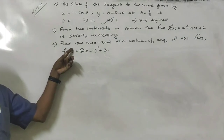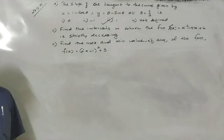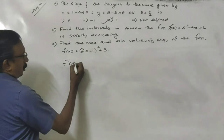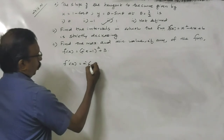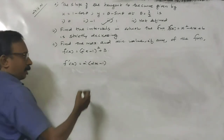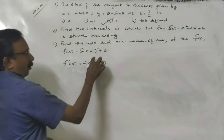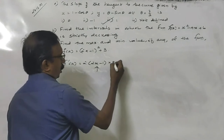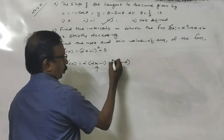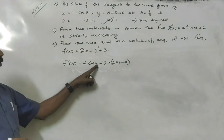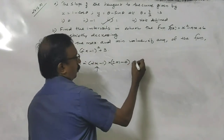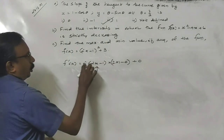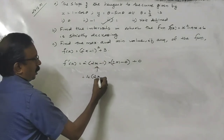The next question is: find the maximum and minimum value of the function. f'(x) equals 2 into (2x minus 1), using the function of a function form. The derivative of (2x minus 1) squared gives 2 into (2x minus 1) into 2, which is 4(2x minus 1).